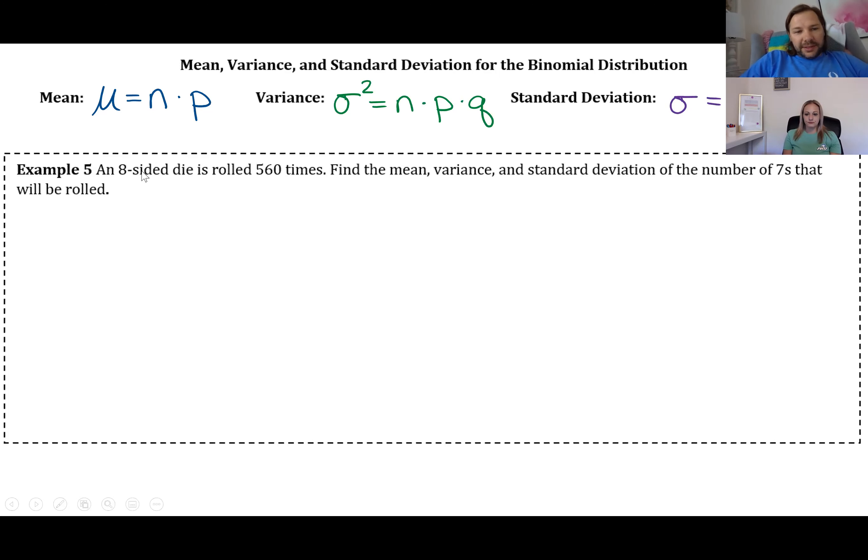So let's just do one example, example five. It says an eight-sided die is rolled 560 times. Find the mean, variance, and standard deviation of the number of sevens that will be rolled.